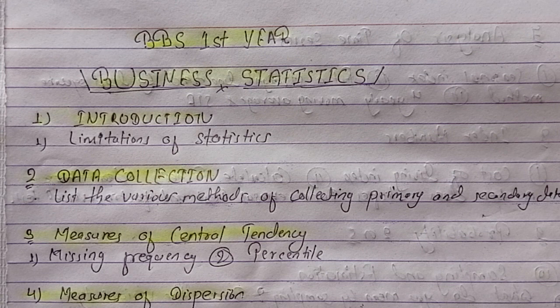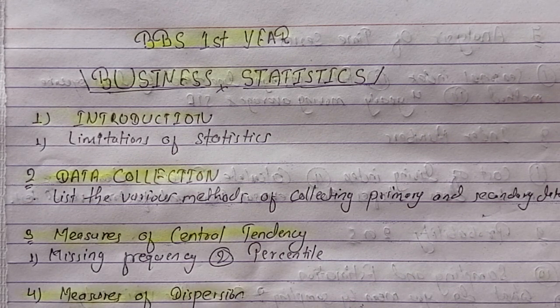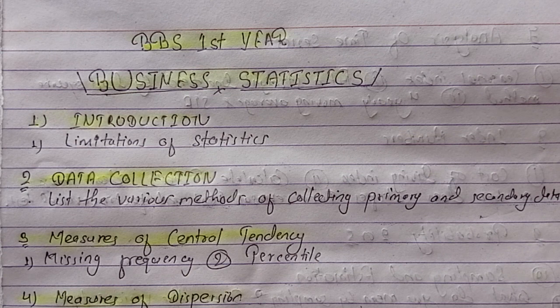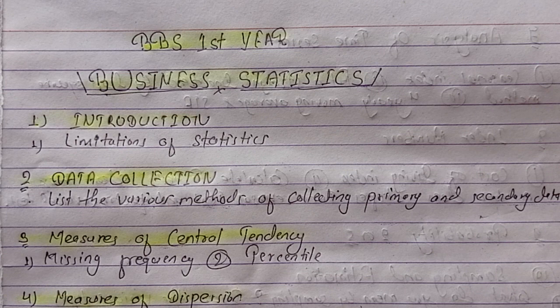In chapter 2, I'm going to talk about data collection. The first question is about the various methods of collecting primary and secondary data. How can you do the primary data collection? Direct personal interview, indirect oral interview, information from correspondence, mail questionnaire, secondary method, serial center, enumerators.